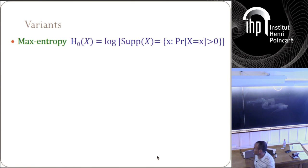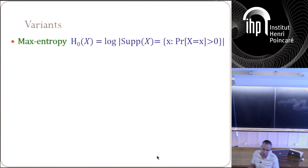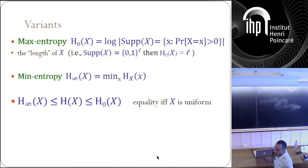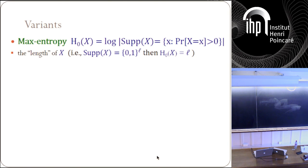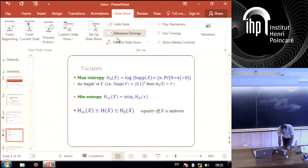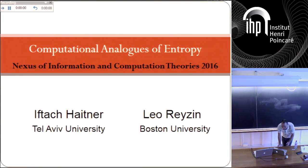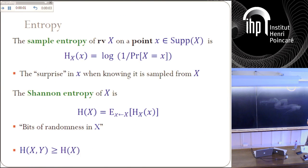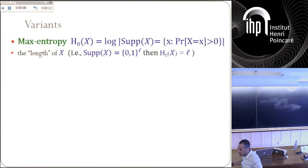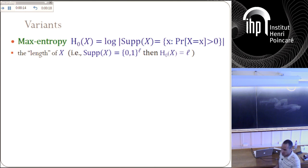I'm going to consider two variants of entropy. The first one is called the max entropy, which is simply the log of the support of the random variable. If the support is simply over an L-bit string, then max entropy is simply the length of X. This is the right way to think about max entropy. I want to speak about min entropy, which is a more interesting notion. It's the sample entropy of the most likely element in the domain — the sample entropy of the most likely element. This is the min entropy of a random variable.